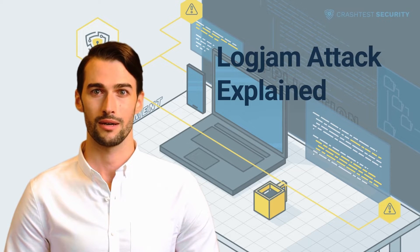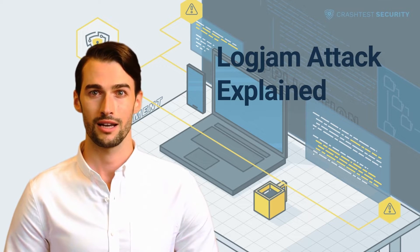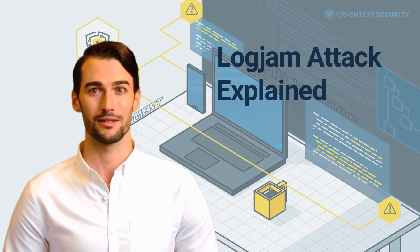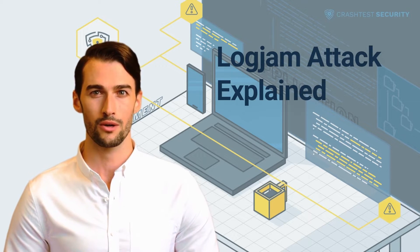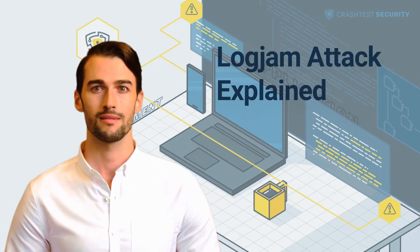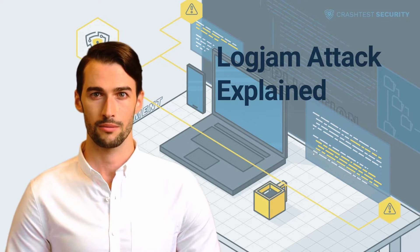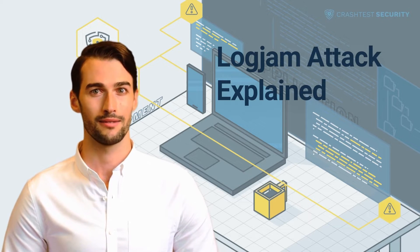The Logjam vulnerability is a security threat that affects the Diffie-Hellman key exchange using 512 to 1024-bit keys. In essence, the threat downgrades the TLS connection and exploits a weakness caused by using the same prime numbers in the encryption to execute a man-in-the-middle attack.